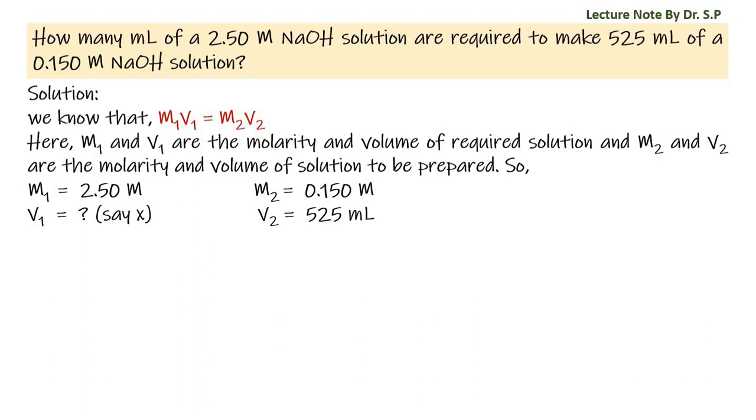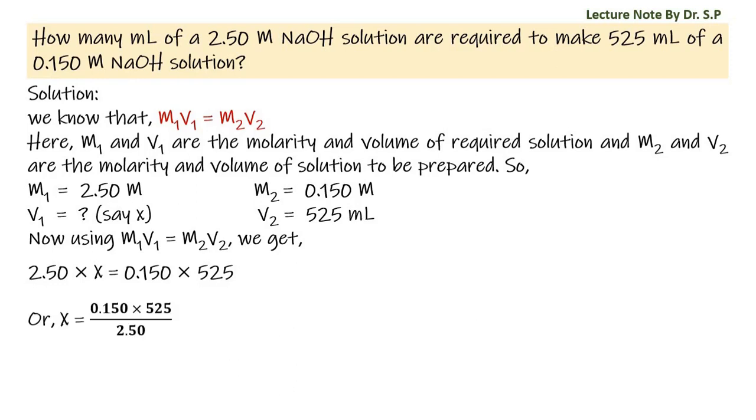Now, using M₁V₁ is equal to M₂V₂, we get 2.50 times x is equal to 0.150 times 525. Or, x is equal to 0.150 times 525 divided by 2.50.